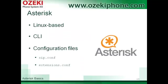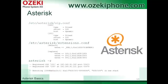As I said, Asterisk is a Linux-based phone system, so you need to configure it with CLI mode. The two basic configuration files are the sip.conf and extensions.conf. Now I will show how you can add the extensions and how they can call each other.